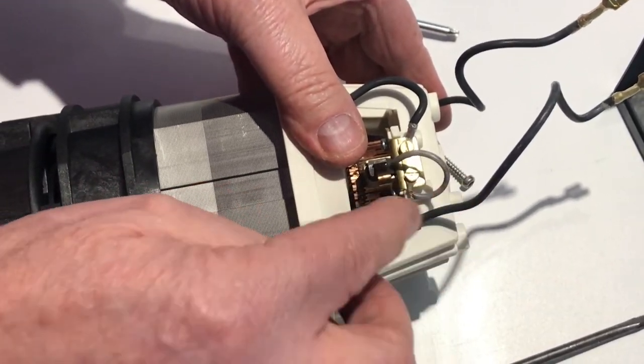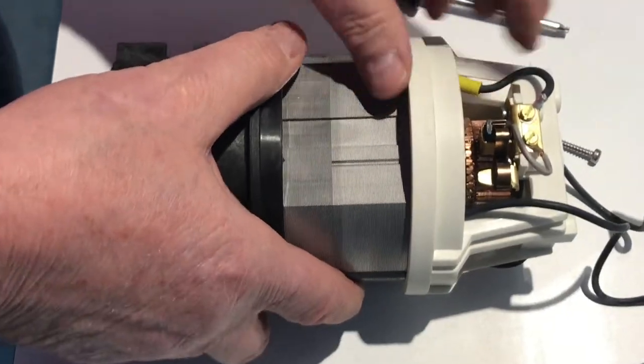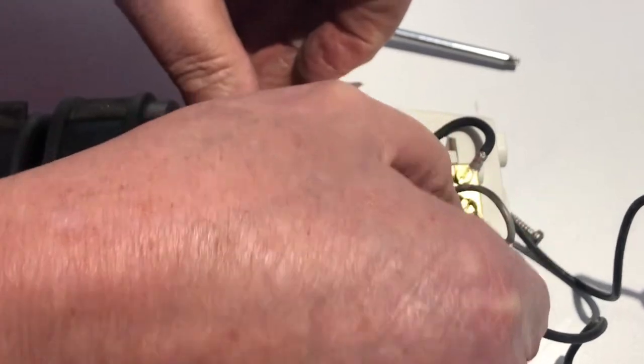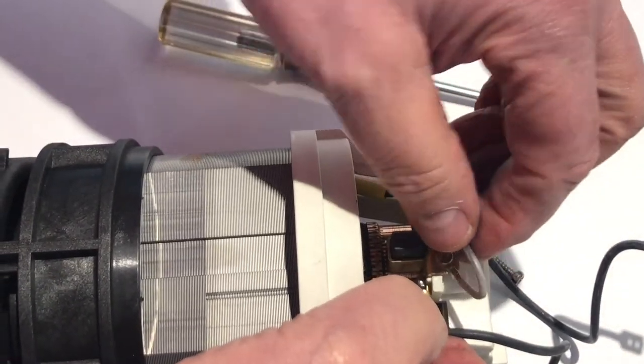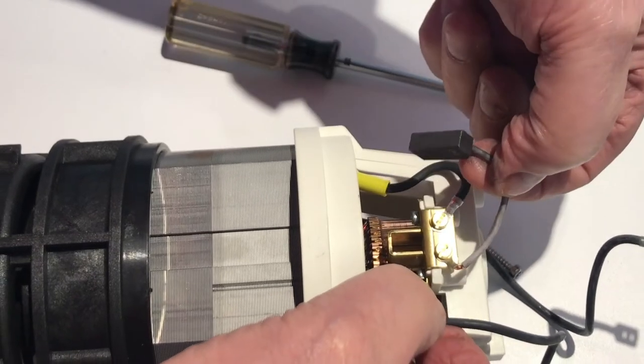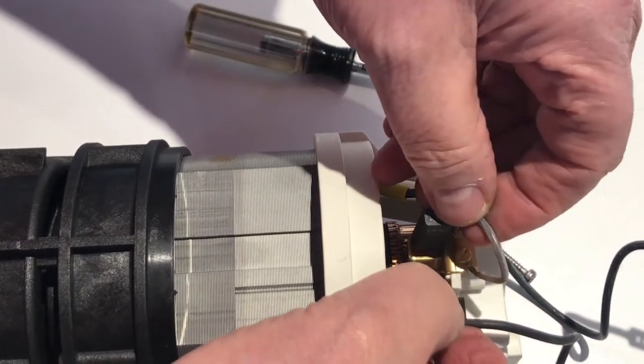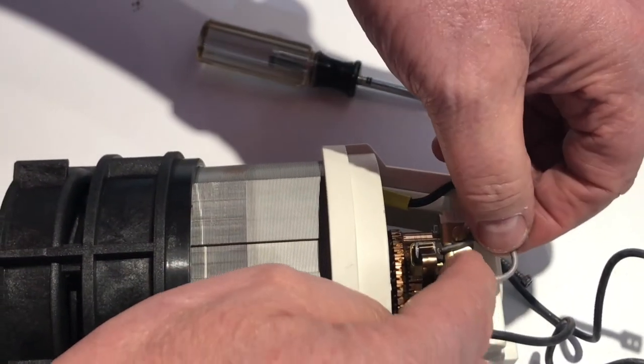Once you're done with this side, just repeat on the other side. Just remember to hold the spring back because it's a pretty heavy duty spring. And grab the wire and pull your brush out, the used brush. Put in your new brush and attach it to your motor.